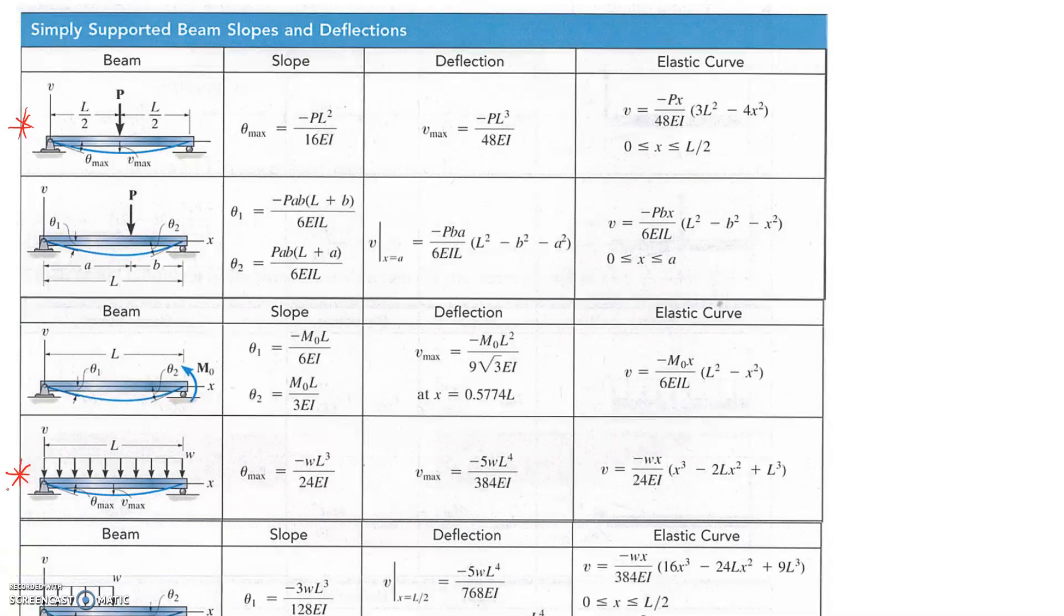What we can do is say the maximum deflection happens in the centre of the beam for both cases. So if we want to know the combined maximum deflection, we just need to take these two entries from the table and add them together for the total composite combined case.